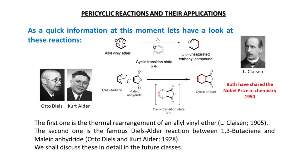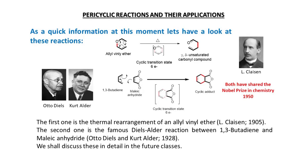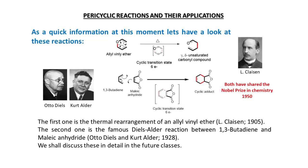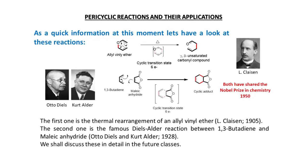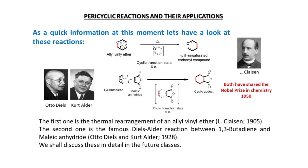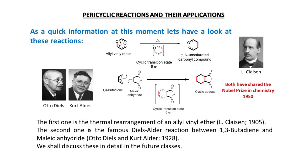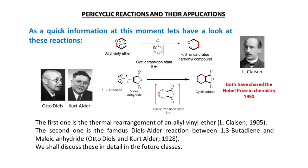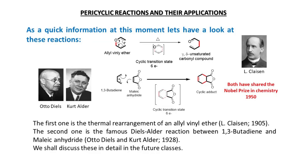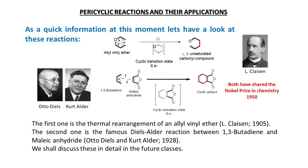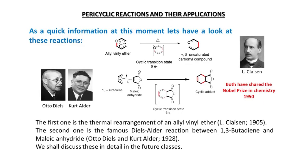The pi electrons make the ether transform into a ketone molecule or carbonyl compound. This is a famous pericyclic reaction. The addition of 1,3-butadiene with maleic anhydride, involving a cyclic transition state resulting in the formation of a cyclic adduct, is named the Diels-Alder reaction after scientists Otto Diels and Kurt Alder, who shared the Nobel Prize in Chemistry in 1950. The former allyl-vinyl ether reaction was introduced by Claisen.